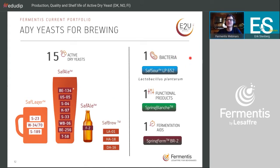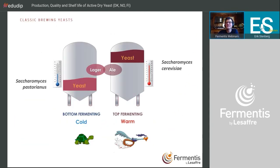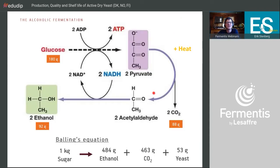We also have one bacteria on the market for kettle souring — a Lactobacillus plantarum — and one functional product called Springblanche, which is a yeast protein extract to create and maintain permanent haze in your beer. If you have an issue with haziness, add a little of this product and your beer will remain hazy. We also have fermentation aids — yeast nutrients — but I won't cover those since most breweries start from barley malt and don't typically need additional nutrients.